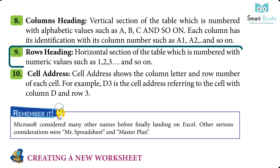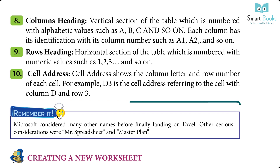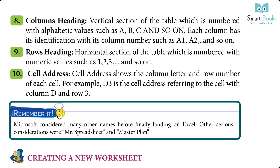Nine — Row Heading: the horizontal section of the table numbered with numeric values such as 1, 2, 3, and so on. Ten — Cell Address: shows the column letter and row number of each cell. For example, D3 is the cell address referring to the cell at column D and row 3.